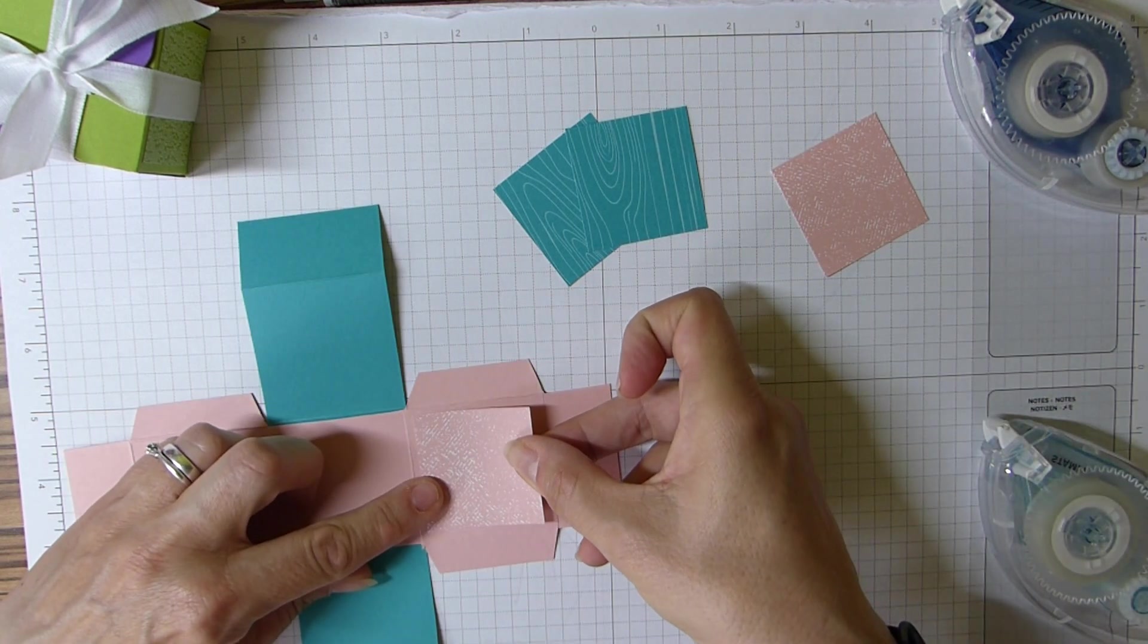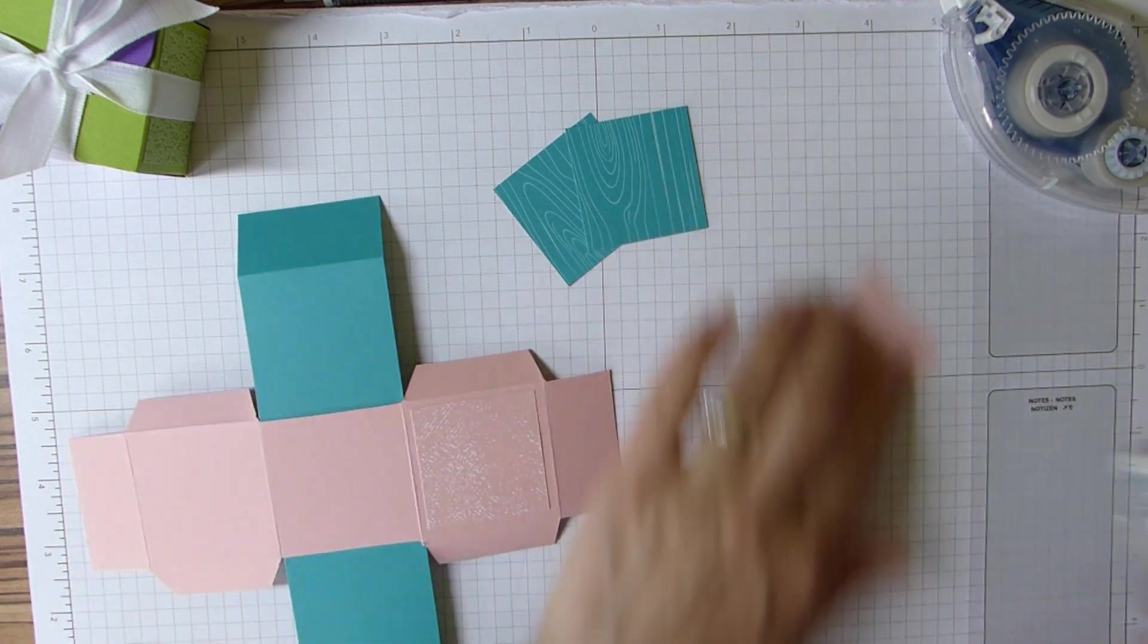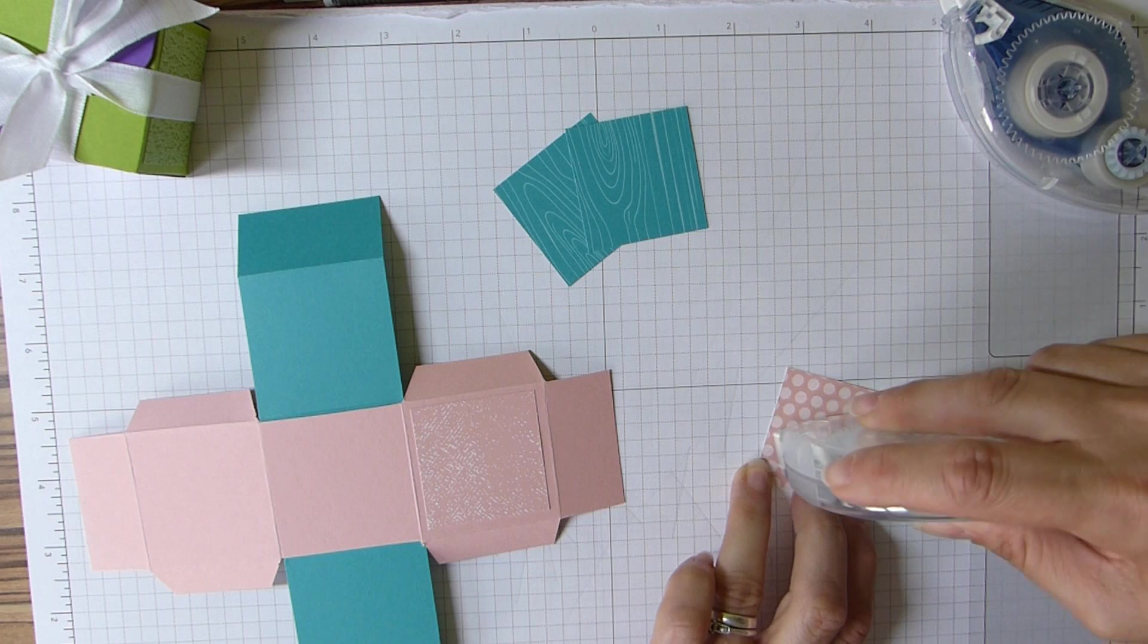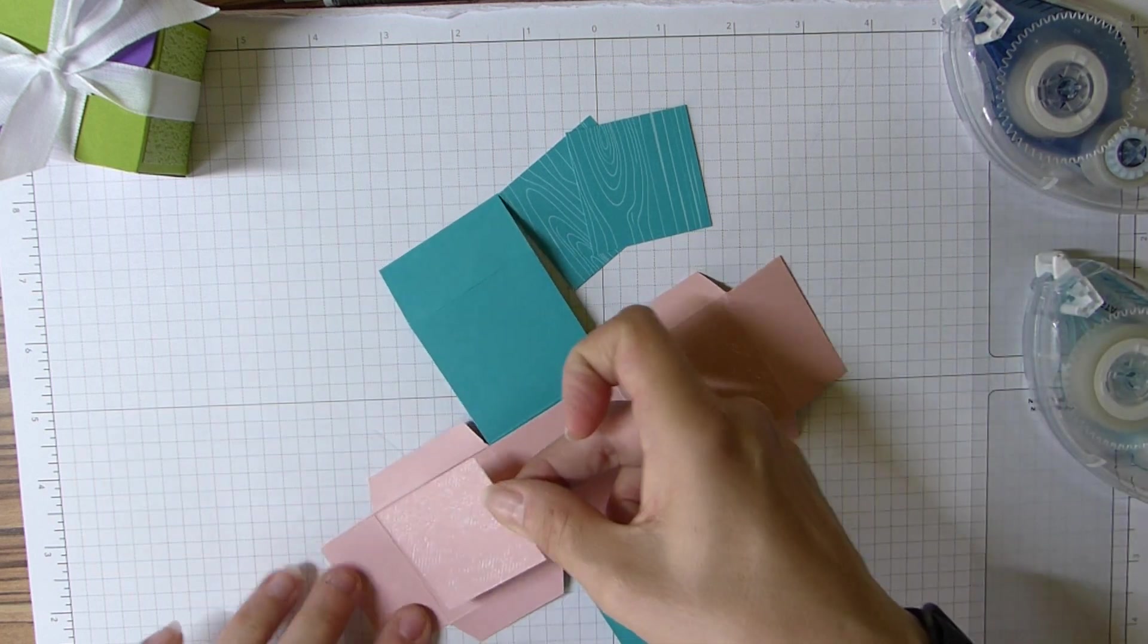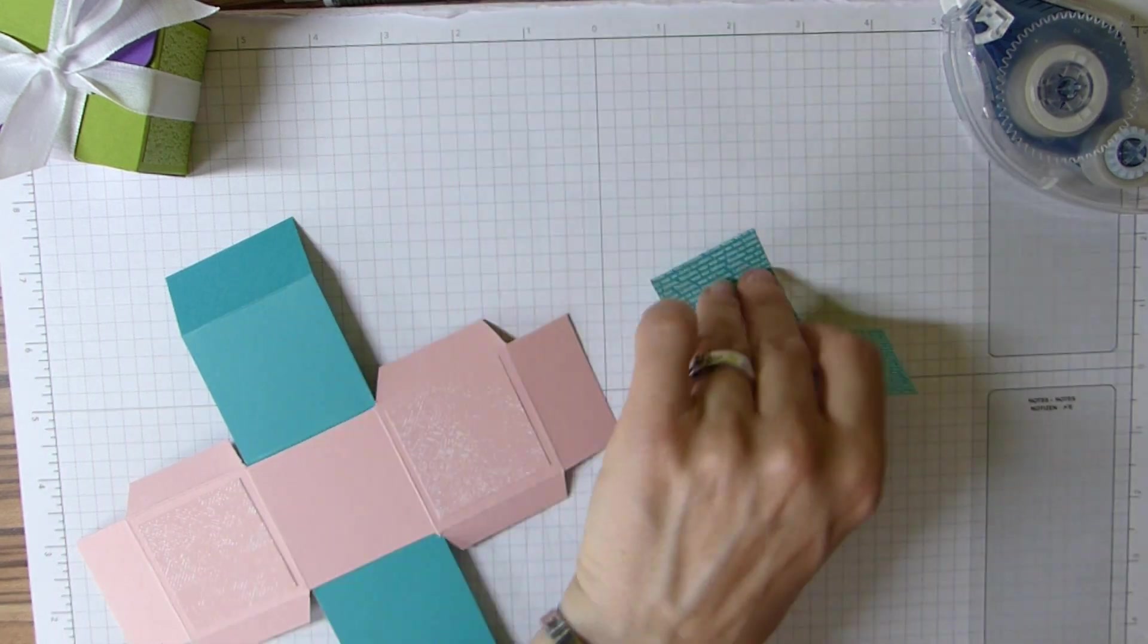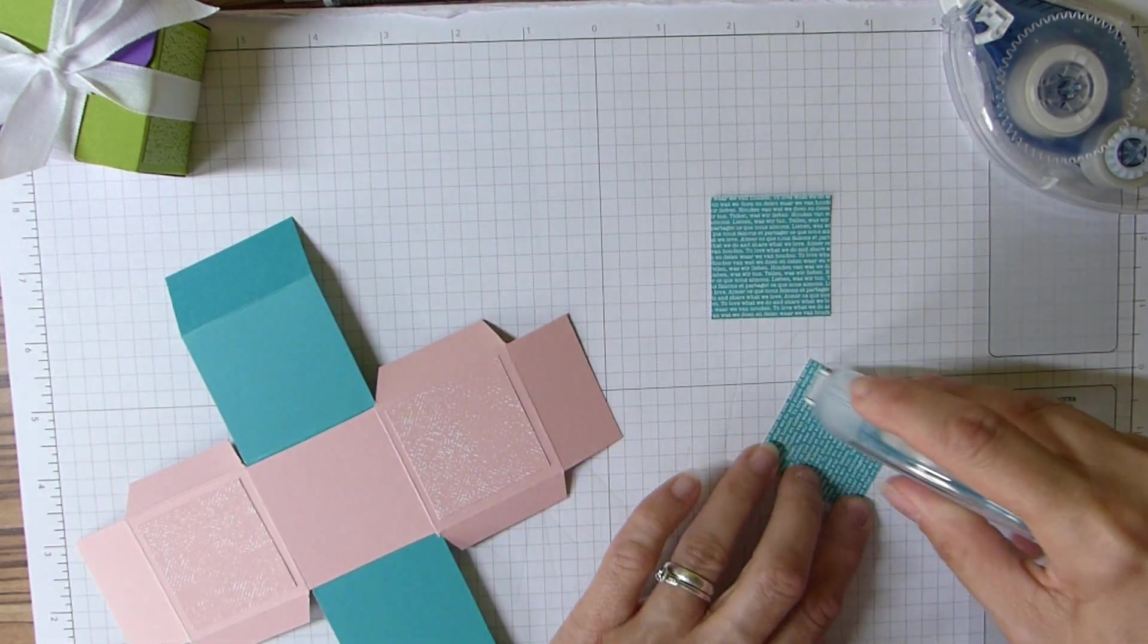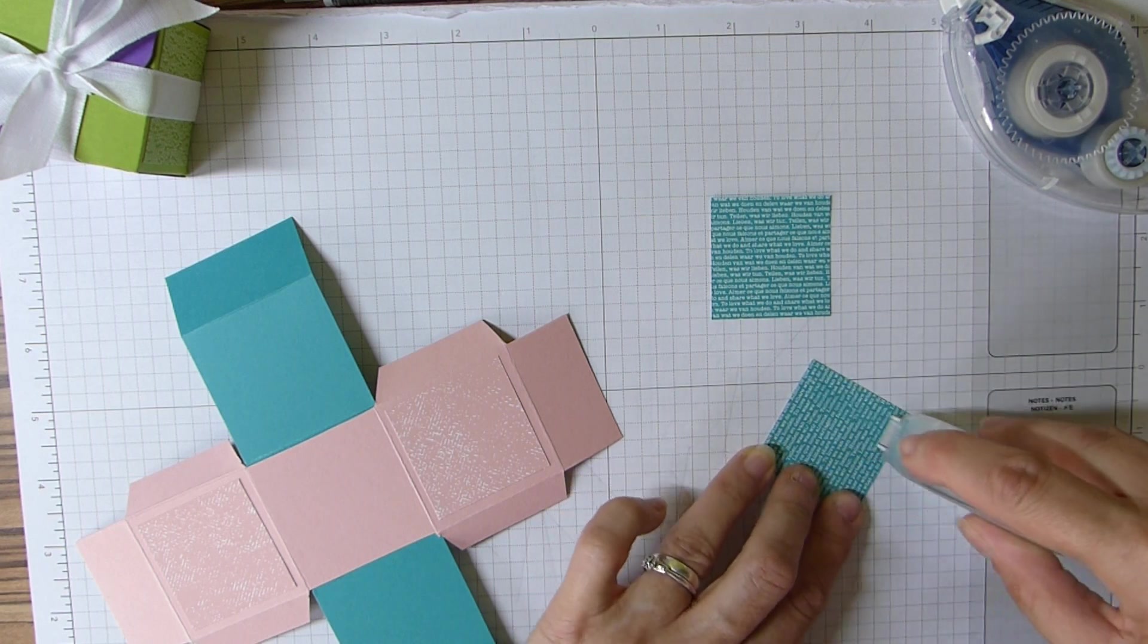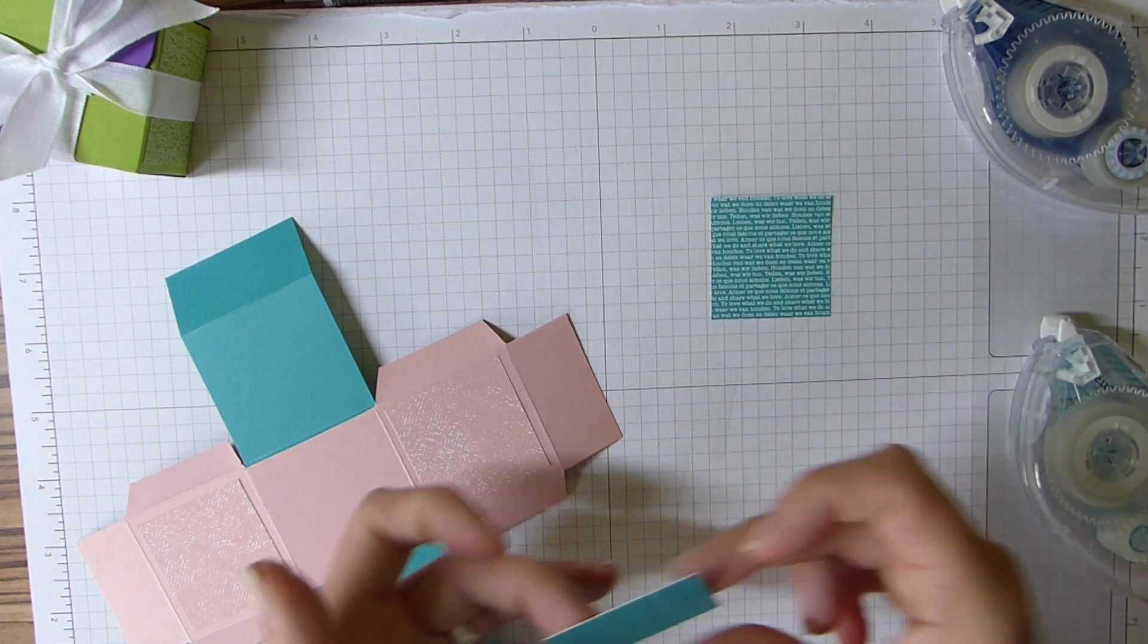Then you're just going to pop them on the four sides of your cube. These are from the Brights and the Blushing Bride is from the Subtle range.